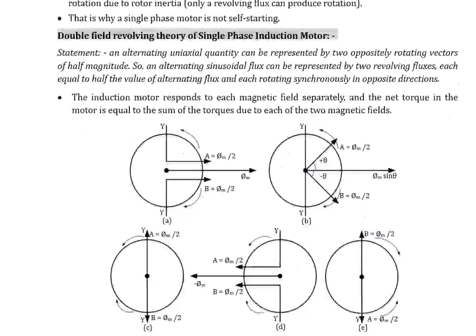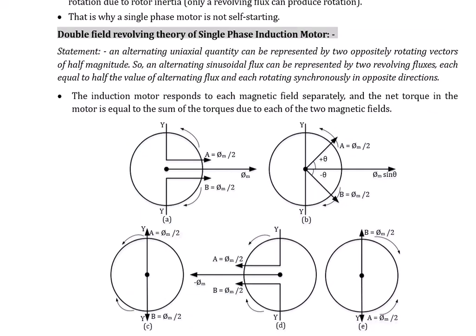Now, what is the double field revolving theory? Statement: An alternating uniaxial quantity can be represented by two oppositely rotating vectors of half magnitude. So an alternating sinusoidal flux can be represented by two revolving fluxes, each equal to half the value of the alternating flux, and each rotating synchronously in opposite directions. We divide the total flux phi into two components, each of magnitude phi_m/2. One rotates anti-clockwise and the other clockwise. We mark positions at 0°, 90°, 180°, 270°, and 360°.